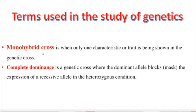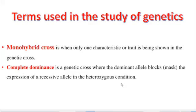Monohybrid cross is when only one characteristic or trait is being studied in a genetic cross. To understand monohybrid cross, we use genetic diagrams such as the Punnett diagram, the pedigree diagram, or a common genetic diagram. Complete dominance is a genetic cross where the dominant allele blocks the expression of a recessive allele in the heterozygous condition.